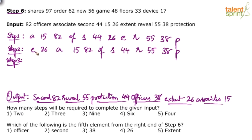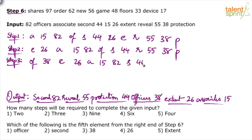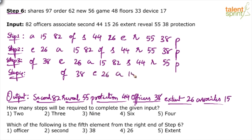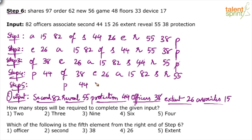In step three, keep extent and 26, associates and 15 in place, and bring 'officers' and 38 to the front. Copy the remaining elements: 82, second, 44, reveal, 55, protection. In step four, officers and 38, extent and 26, associates and 15 are in place. Bring 'protection' and 44 to the front. The remaining elements are: 82, second, reveal, 55.